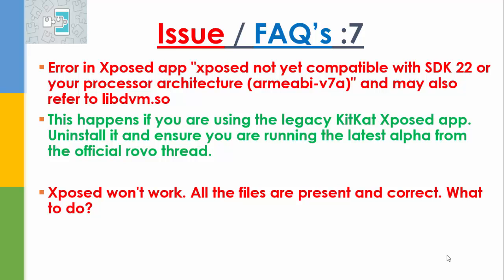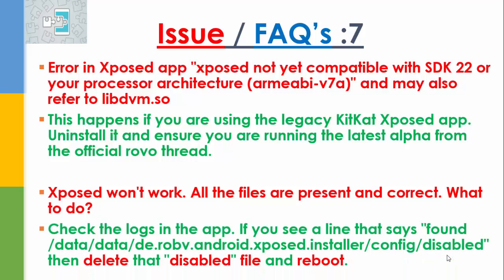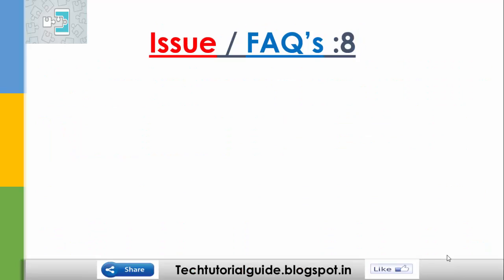If Xposed won't work and all files are present but not correct, you need to check the logs. If you see a line that states 'found /data/data/de.robv.android.xposed.installer/config/disable', then you need to delete that disable file and reboot, and it will start the Xposed installer normally.